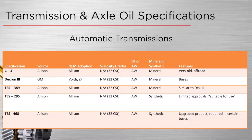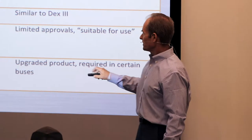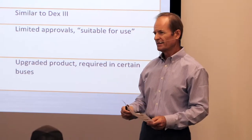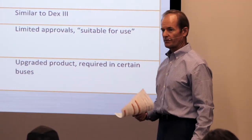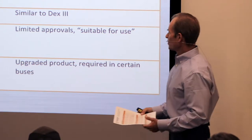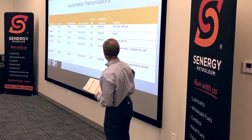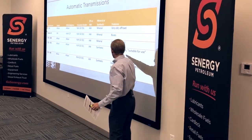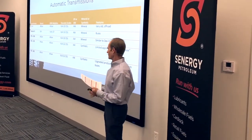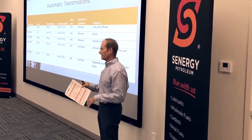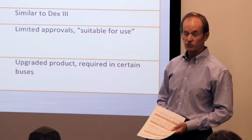The most notable in automatic transmissions, of course, is Allison — the dominant player in this market. Allison has a specification called TES295, which is a synthetic transmission oil, kind of like a beefed-up cousin to the old Dexron III for use in these transmissions. Allison has a website where they maintain approvals, and there are probably 10 different products that have the official Allison TES295 approval.